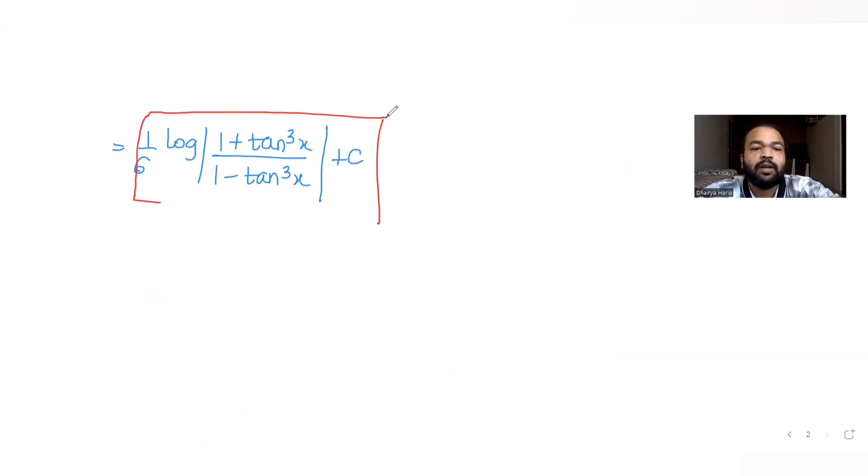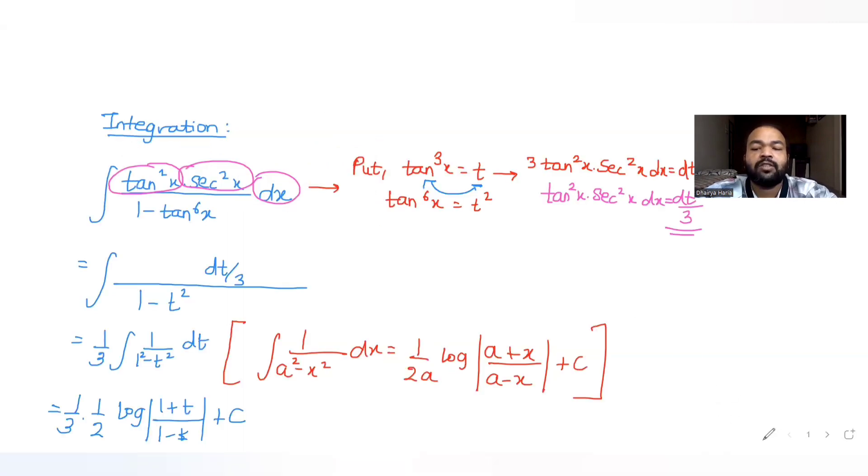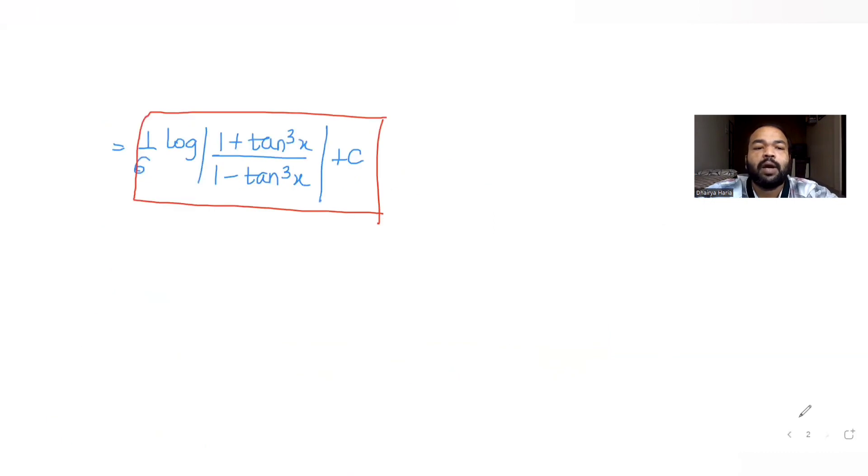The integral of tan²x sec²x dx over 1 minus tan⁶x equals 1/6 log|(1 + tan³x)/(1 - tan³x)| plus C. If you see the option which matches with the answer is d, so a is the correct answer for the question.